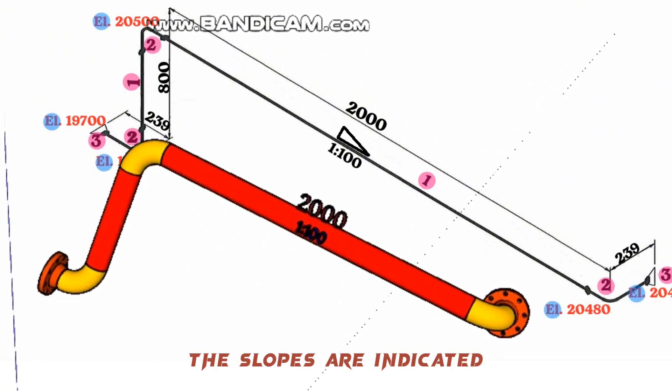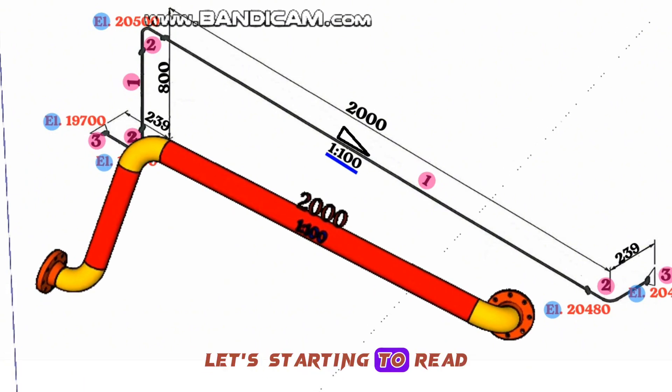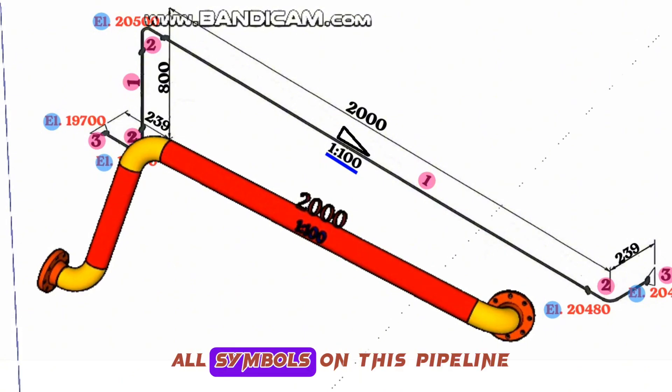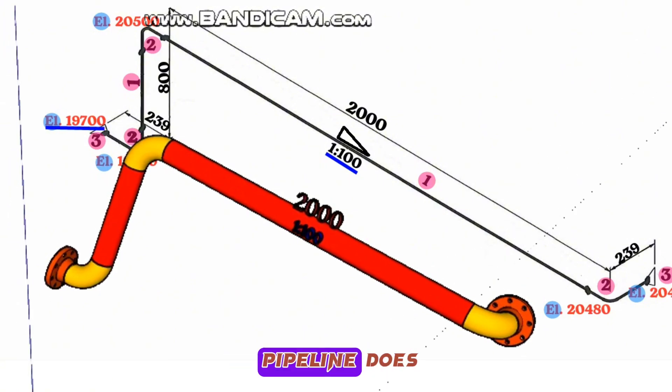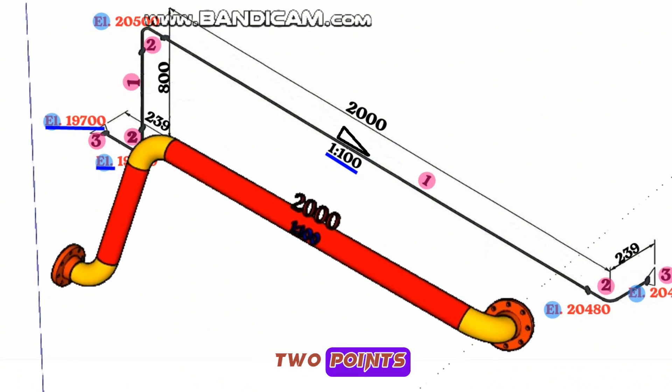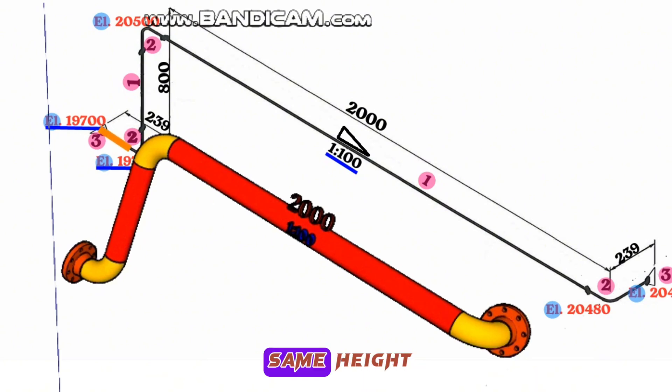The slopes are indicated by these symbols in pipe isometric drawings. Let's start to read and try to understand all symbols on this pipeline. As you can see, the height of the pipeline does not change in these two points. It starts from a height of 19,700 millimeters and continues at the same height.